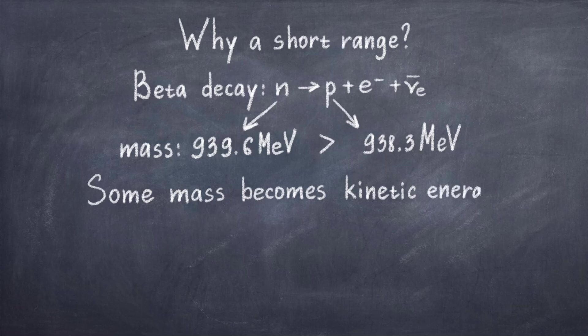The proton, however, weighs around 938.3 MeV, which is a bit less than a neutron, thus everything is fine. A bit of the mass is changed into kinetic energy, which mostly goes into the electron.